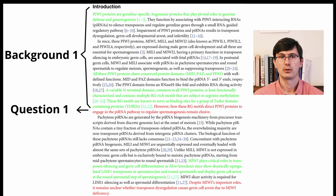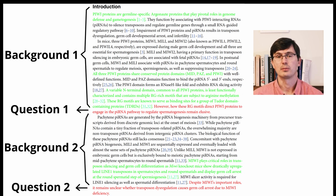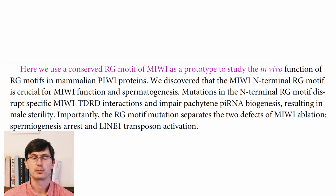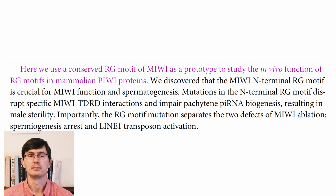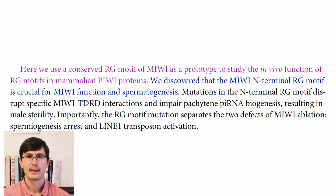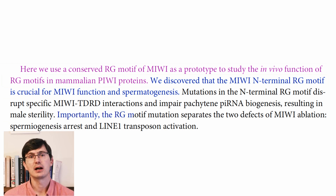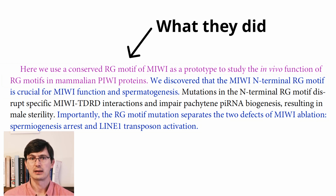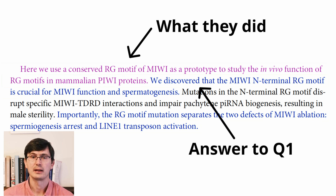Now let's move to the final paragraph of the introduction. First, the authors introduce what they did: here we use a conserved RG motif of MIWI as a prototype to study the in vivo function of an RG motif in mammalian PIWI protein. Then the authors describe the first finding: we discover that the MIWI N-terminal RG motif is crucial for MIWI function in spermatogenesis. And then they describe their second finding: importantly, the RG motif mutation separates the two defects of MIWI ablation — spermiogenesis arrest and LINE-1 transposon activation. In this way, the last paragraph briefly explains what the authors did, followed by the first finding that answers the first question posed, and then the second finding that answers the second.